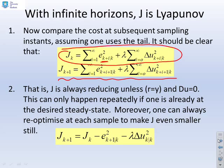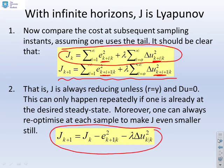And what's the key difference? The key difference is this one had k plus i, this one had k plus i plus 1. So if you compare these two J's, this is what you get. J_{k+1} equals J_k minus e squared at k+1,k, and lambda delta u squared, where it was at time k. And so in other words, J is always reducing unless r equals y and delta u equals 0. So it's the same argument as before, unless you were already at the desired steady state, then this J will keep getting smaller.